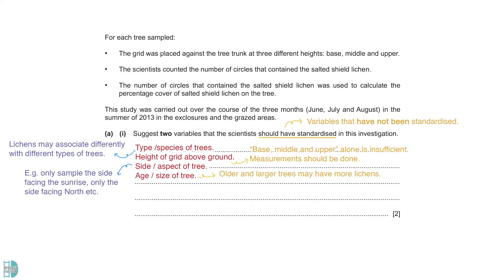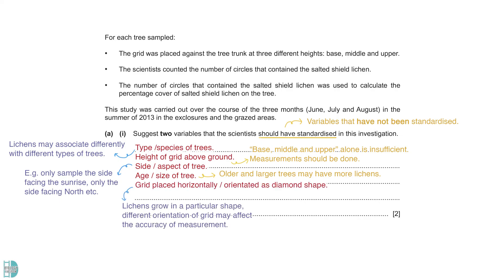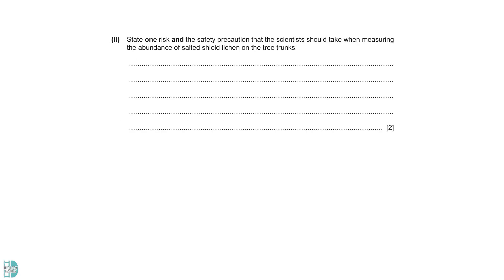All of the trees being sampled should be the same age and size, as older and larger trees may have more lichens growing on them due to the availability of space. The orientation of the grid being placed should be fixed too. Lichens grow in a particular shape, so if the grid was placed differently each time, the percentage cover may be different.